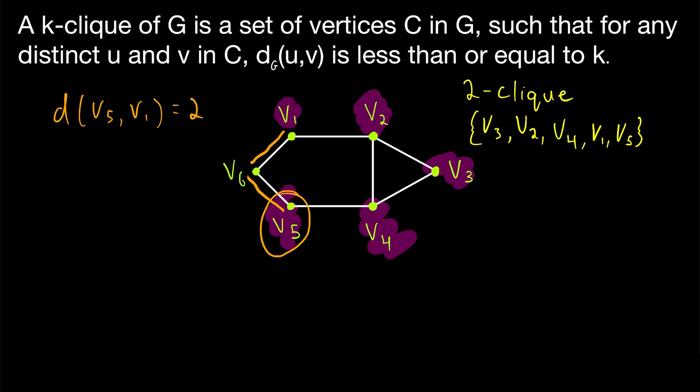However, it might make you uncomfortable that in order to get from v5 to v1 in at most two edges, we need to travel through this vertex v6 that isn't in our click. It might seem inappropriate to use a path that goes outside of a click as a way of permitting these two vertices to go into the click. If we were only allowed to travel within the two-click, then the distance between v1 and v5 would be three. So they certainly couldn't be in this two-click together because their distance within the two-click is greater than two. So v1 and v5 having a distance less than or equal to two only because of some vertex that isn't in the click, it might make you uncomfortable, but it is indeed allowed for the definition of k-clicks.